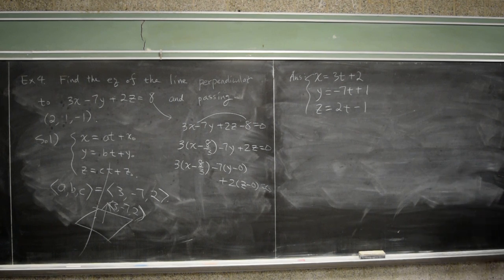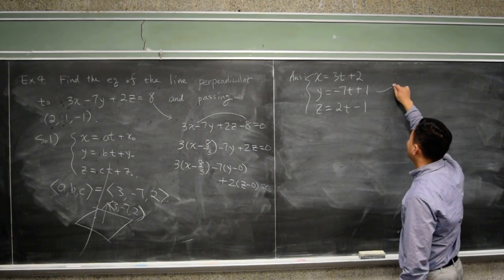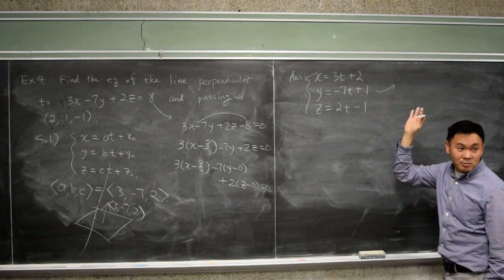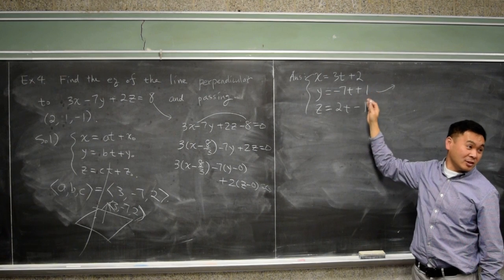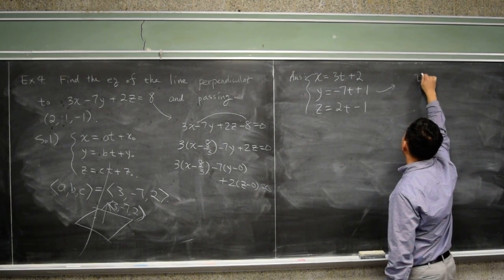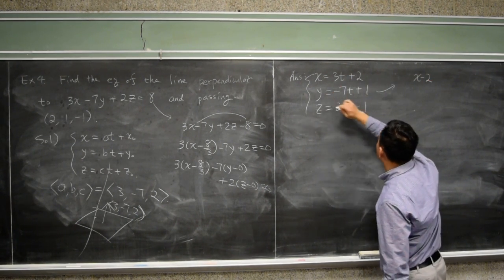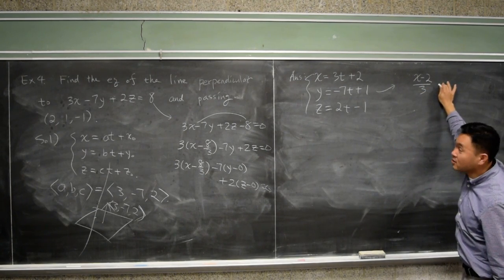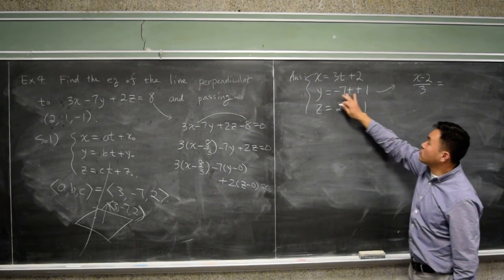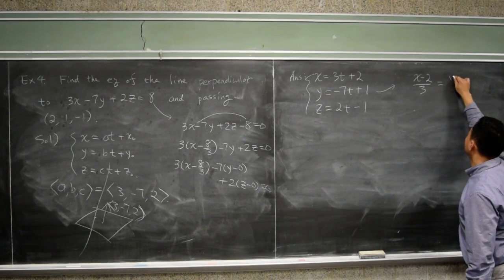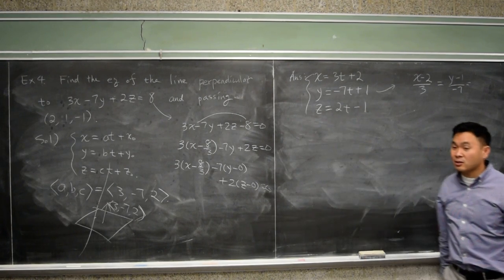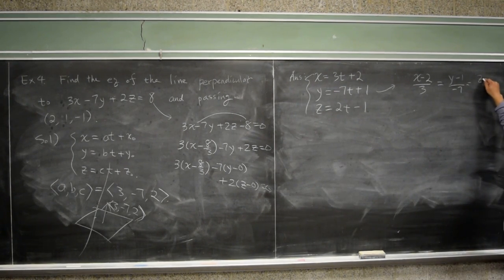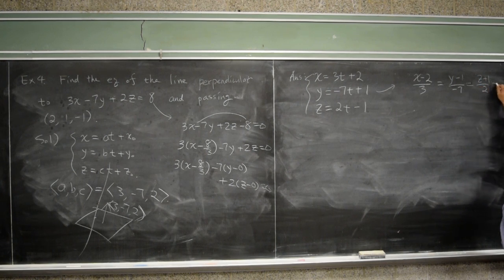And then, if you want to change this into symmetric form, how do you change this into symmetric form? Solve for T, right? So if you solve this for T, you have to subtract 2 from both sides and divide it by 3. That's equal to T. And if you subtract 1 and divide it by negative 7, that's also equal to T. So adding 1 and dividing by 2, all of these are equal to T, and you don't have to write T there.